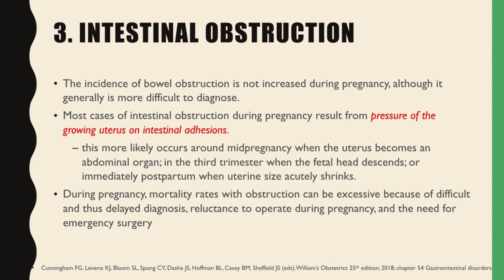Next, we have intestinal obstruction. The incidence of bowel obstruction is not increased during pregnancy, although it is generally more difficult to diagnose. Most cases of intestinal obstruction during pregnancy result from pressure of the growing uterus on intestinal adhesions. This more likely occurs during or around mid-pregnancy when the uterus becomes an abdominal organ, in the third trimester when the fetal head descends, or immediately postpartum when uterine size acutely shrinks. During pregnancy, mortality rates with obstruction can be excessive because of difficult and thus delayed diagnosis, reluctance to operate during pregnancy, and the need for emergency surgery.